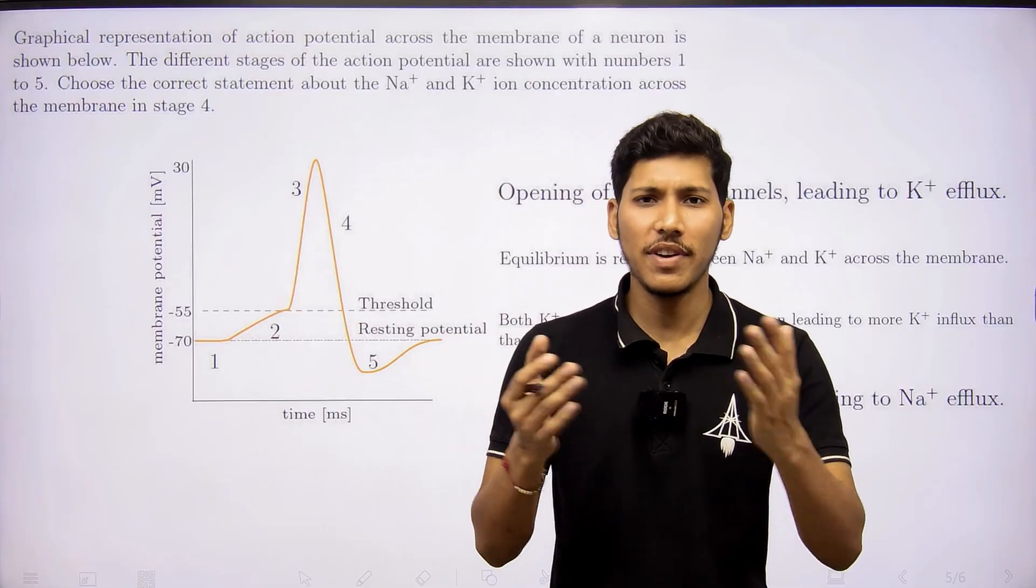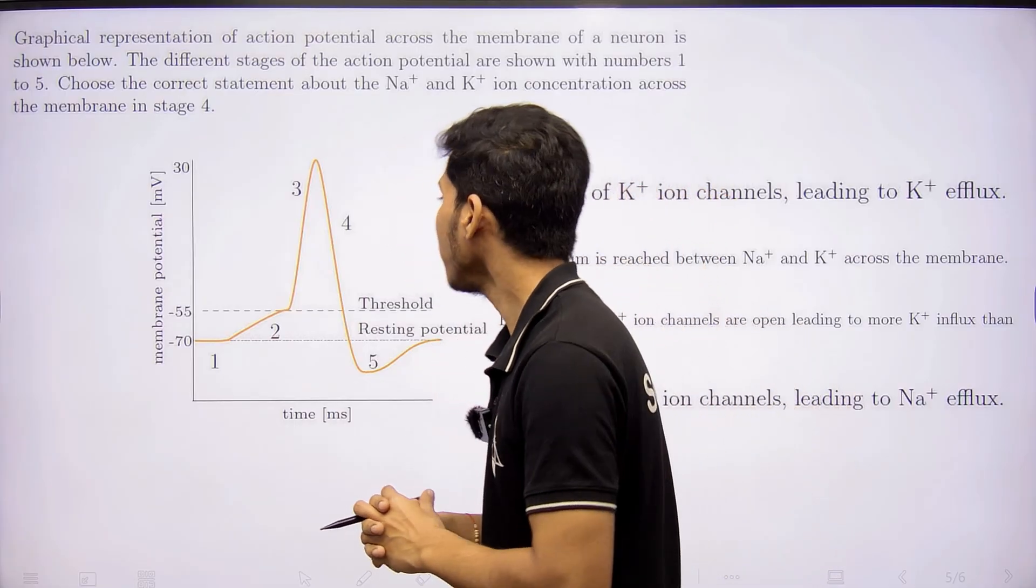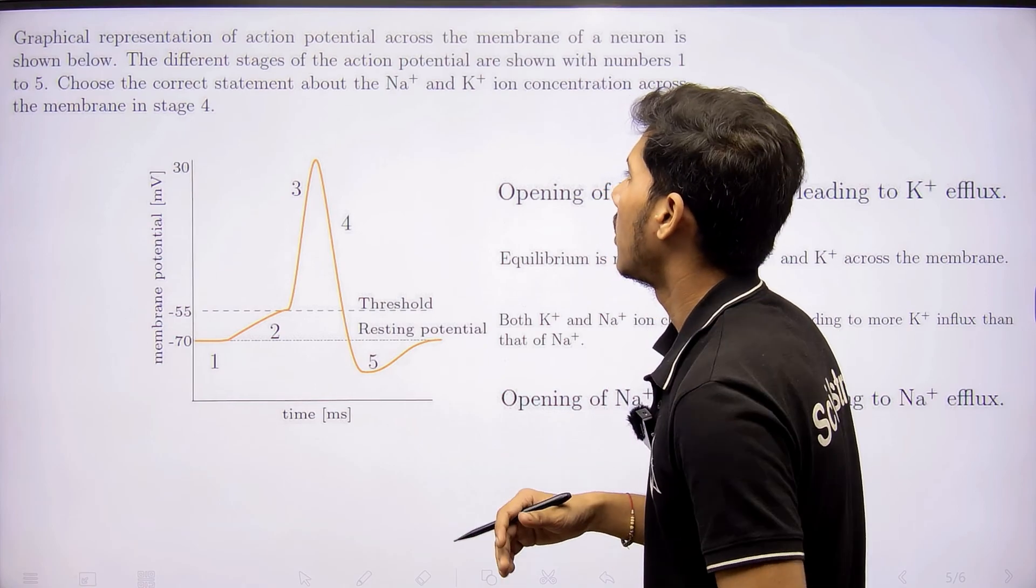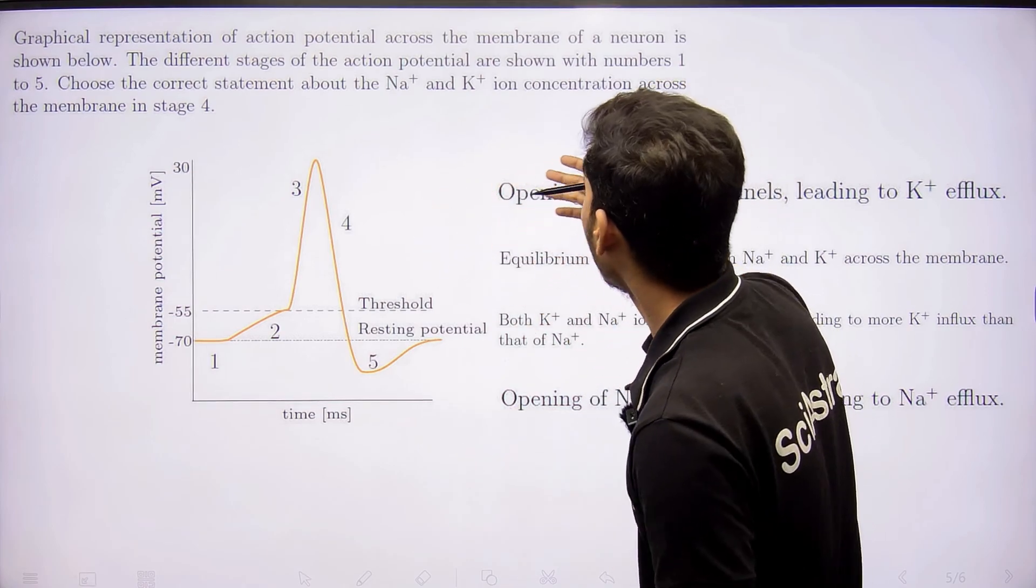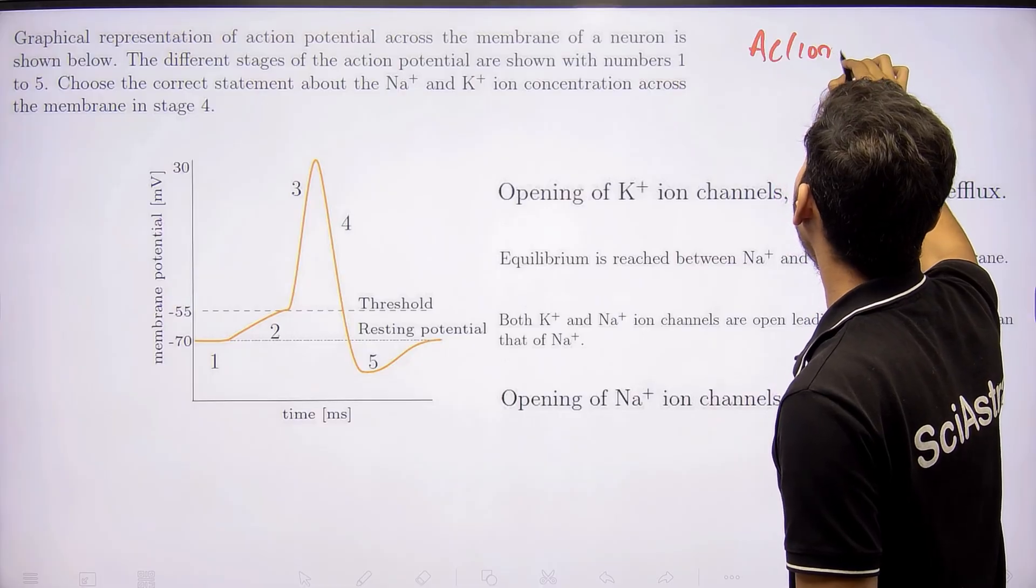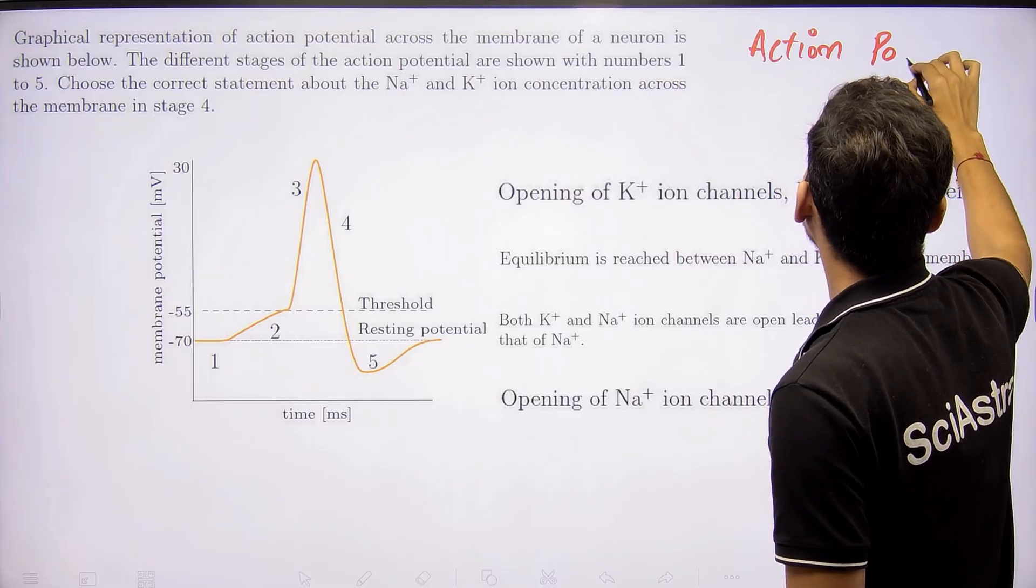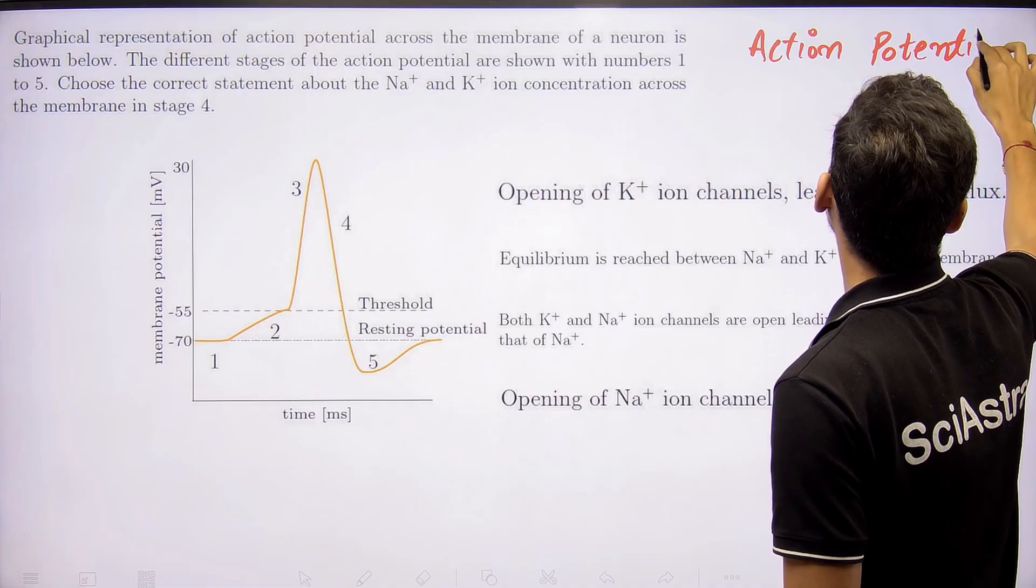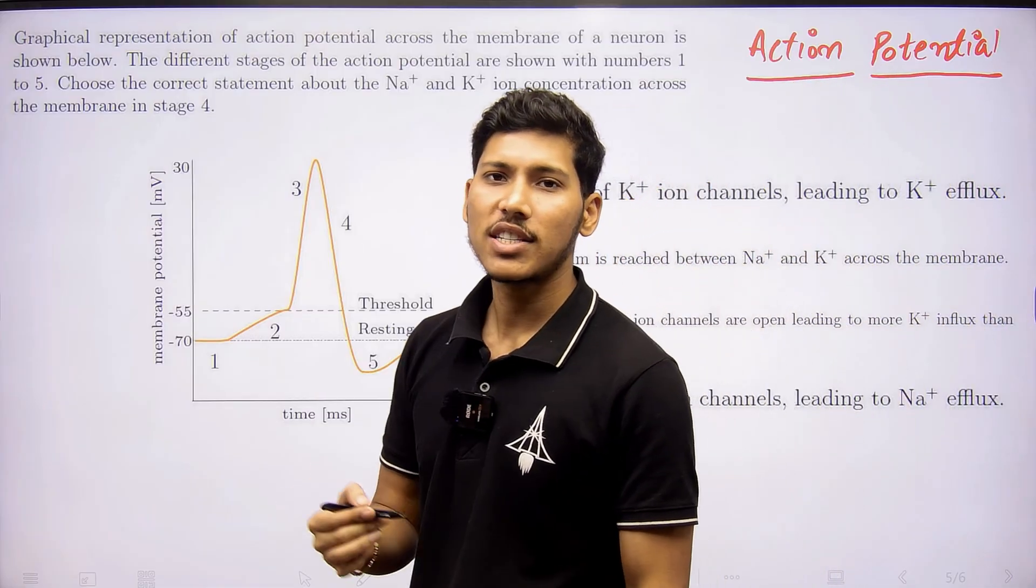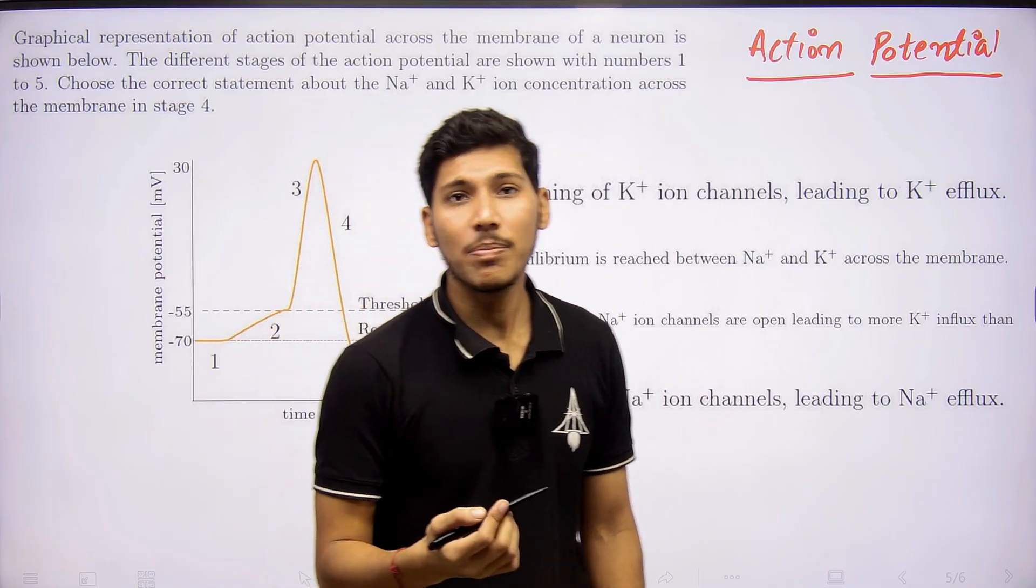That's why they tend to ask questions from this topic. Let's see this question here. This is from the topic of action potential generation. We know that the impulses that are produced in a neuron are known as action potential, and they have asked this question from that context.